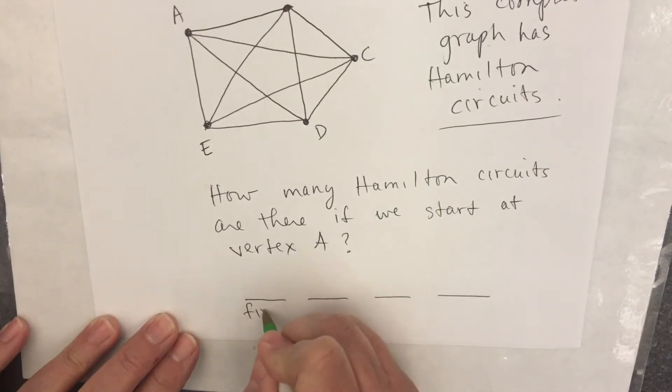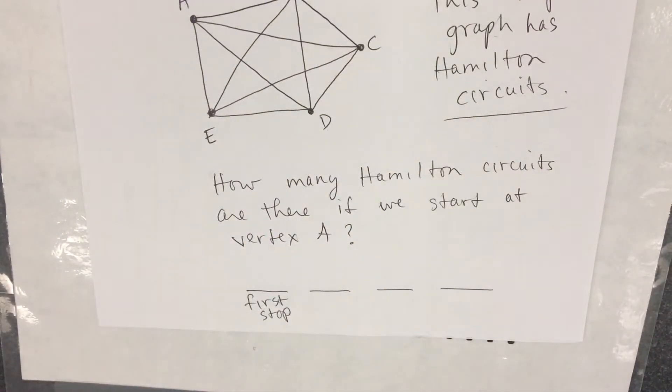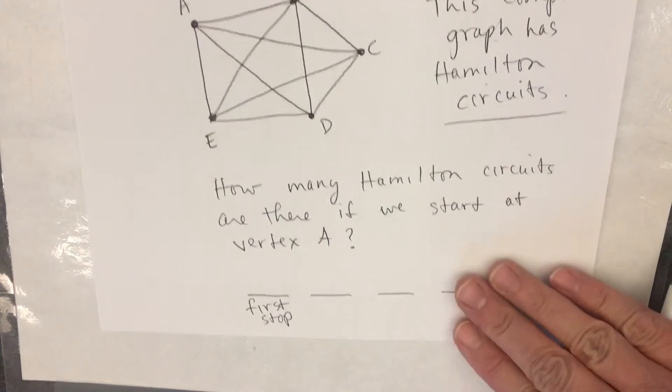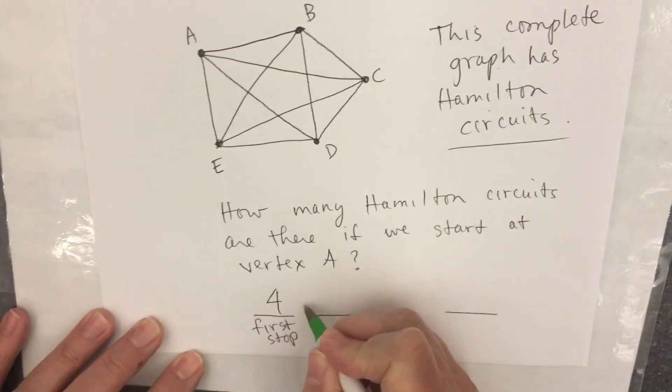So I'm going to call the first blank the first stop as I run errands around town. How many choices do I have? Four choices. Four choices. Four in that blank.